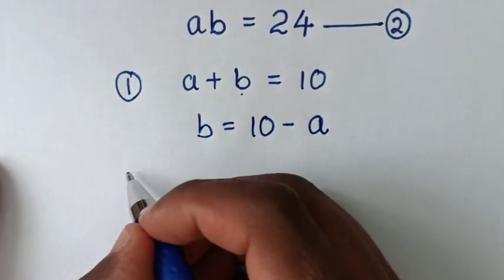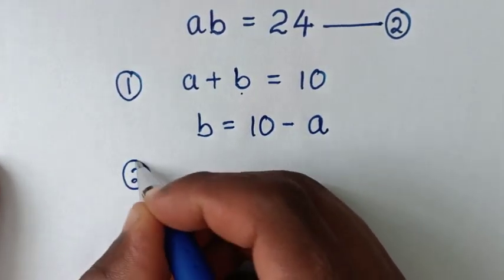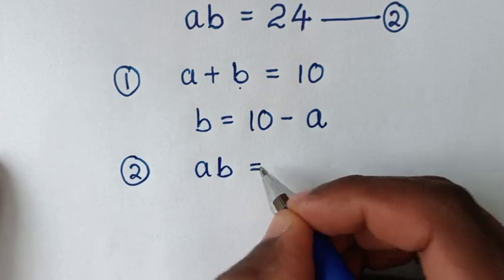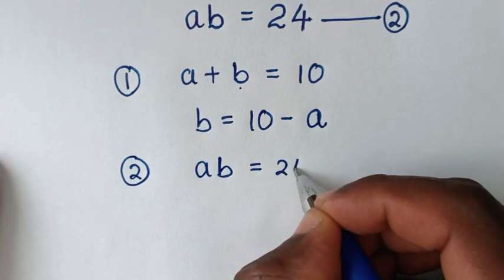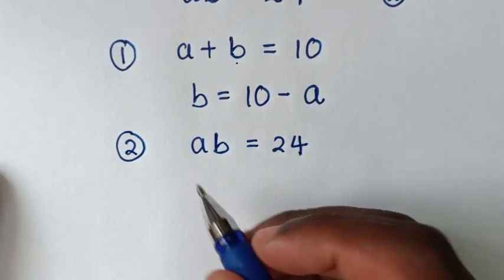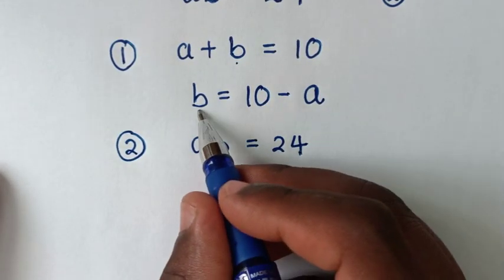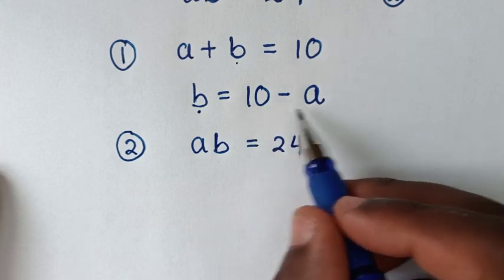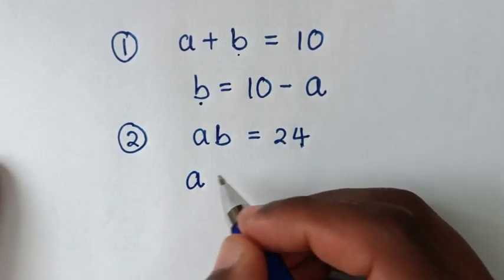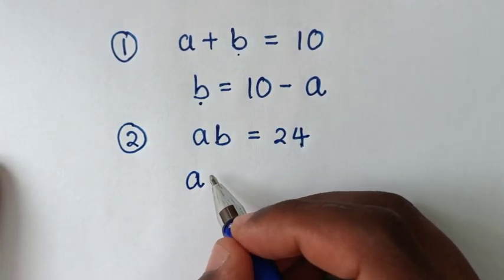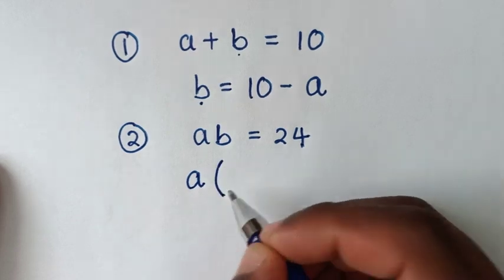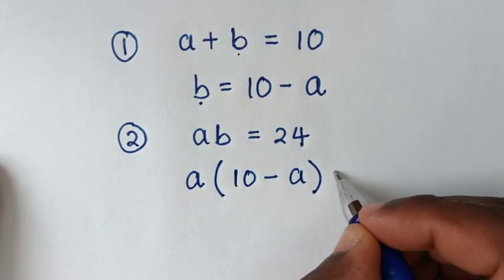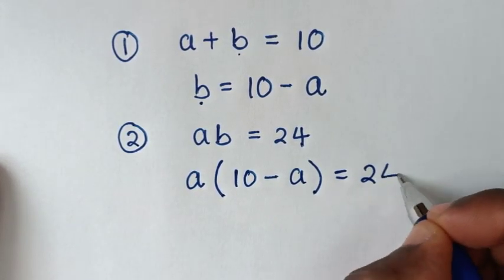Then, in the next step, from equation 2, which is a times b is equal to 24, we'll substitute b, where b is 10 minus a. So it will be a times (10 minus a) is equal to 24.